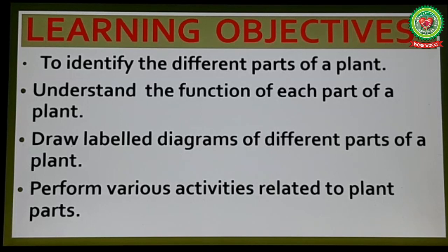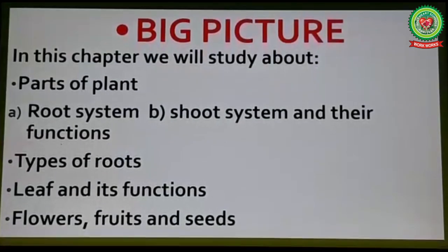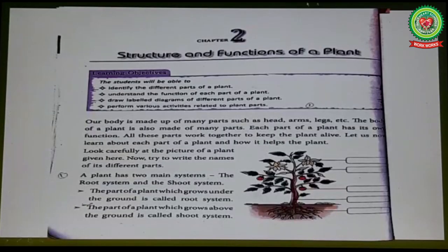We will also perform various activities related to plant parts. First, I will tell you the big picture. In this chapter we will study about parts of a plant, the root system, the shoot system and their functions, types of roots, leaf and its functions, flowers, fruits and seeds. Now open your book on page 14, lesson 2: Structure and Functions of a Plant.